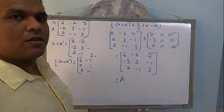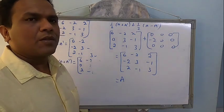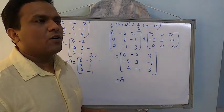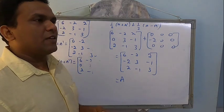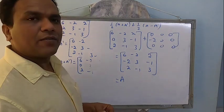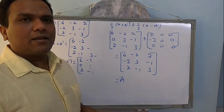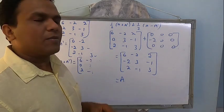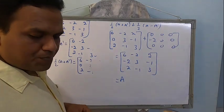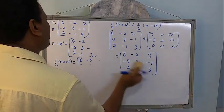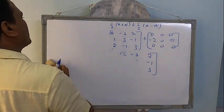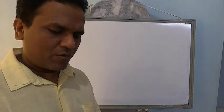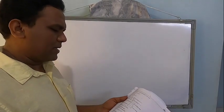To summarize the transpose chapter: properties covered are (A+B)', (A-B)', (AB)' = B'A'. Definitions: symmetric if A = A', skew-symmetric if A = -A'. Every matrix can be expressed as sum of symmetric and skew-symmetric parts. Sub-parts 3 and 4 of problem 10 are left as assignment.